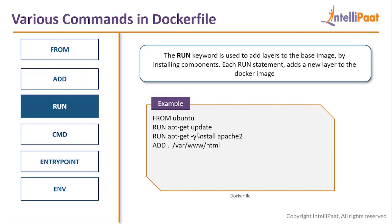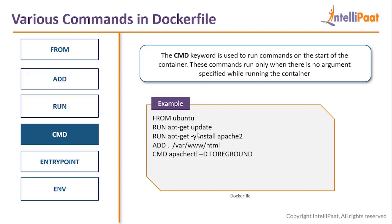The CMD keyword is used to run commands at the start of the container. These commands run only when there is no argument specified while running the container. The docker run command syntax is 'docker run -it -d image_name', and after the image name you can also specify a command. If you don't specify anything, the CMD command in the Dockerfile will run when starting the container; otherwise, whatever command you specify in docker run will run instead.